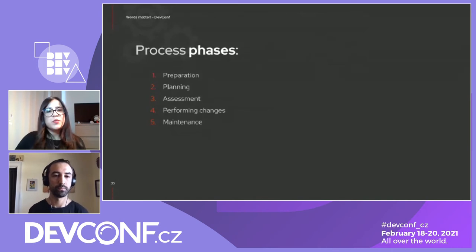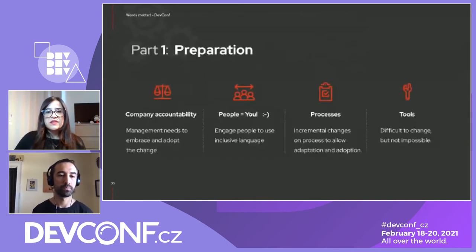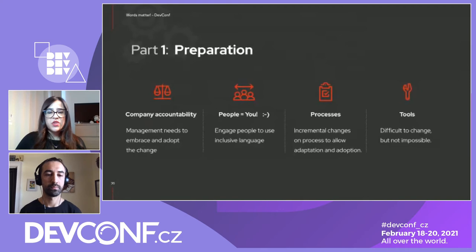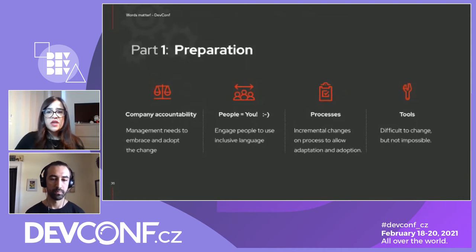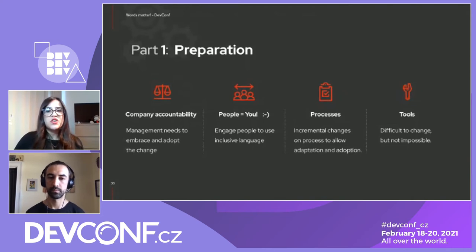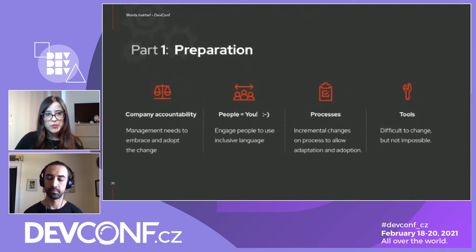Starting with the preparation phase — this involves company accountability, such as the Red Hat CTO announcement, and people engagement. They will look into the code, documentation, and web properties to identify harmful language, and from those sources determine how much work there is to do. At this stage you may find difficulties to change harmful language in processes and tools — these are the most difficult to change, but they are not impossible.